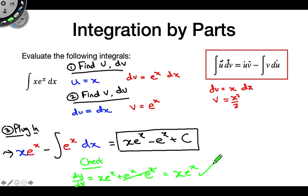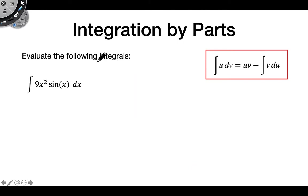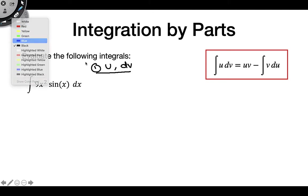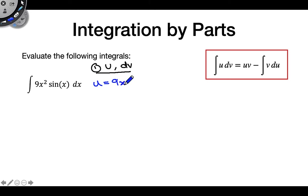That's basically how integration by parts works: we extract u and dv, then put everything together in the formula. Let's do one more example. The first step is to choose u and dv. Pause the video and see if you can figure it out. If you guessed u equals 9x² and dv equals sin(x) dx — congratulations, those are the correct answers.